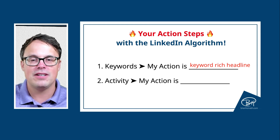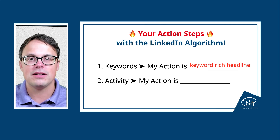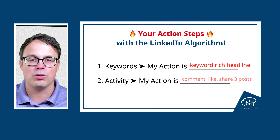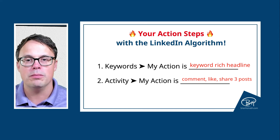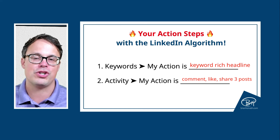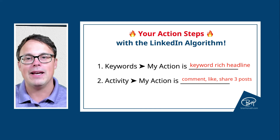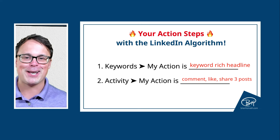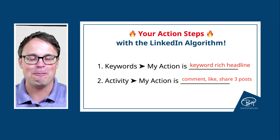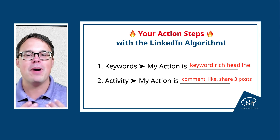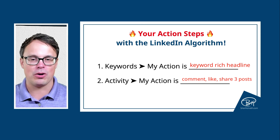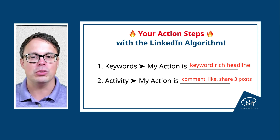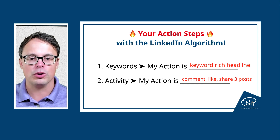For activity: go comment on three to five posts, go like three to five posts, go share at least one post. And when you share, don't just share it — make an introduction to it, explain why you're sharing it, which means you have to actually read it. Add a hashtag or two based on things you'd like to be known for, or that you think are relevant.